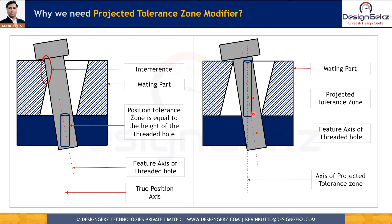When we use the projected tolerance zone modifying symbol, we control the threaded hole's tolerance of position or orientation in the lower part for a height equivalent to the thickness of the upper part. The tolerance zone is located above the lower part, and this is achieved with the help of the projected tolerance zone. The feature axis — or the axis of the unrelated actual mating envelope — for this lower threaded hole has to be within this projected tolerance zone.